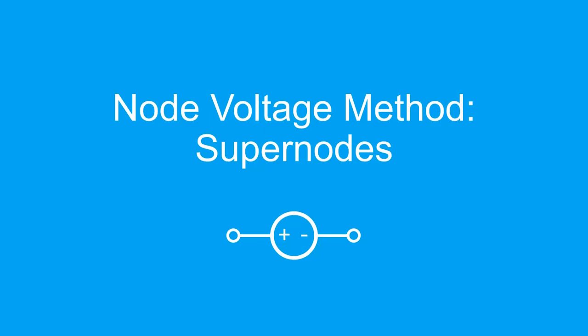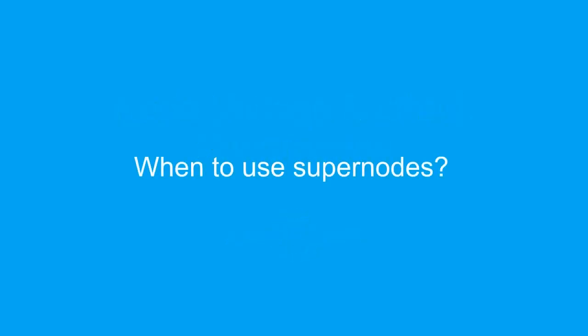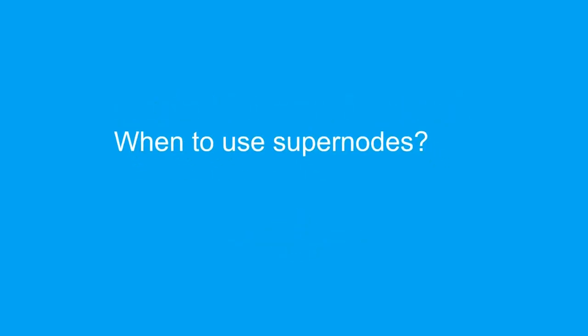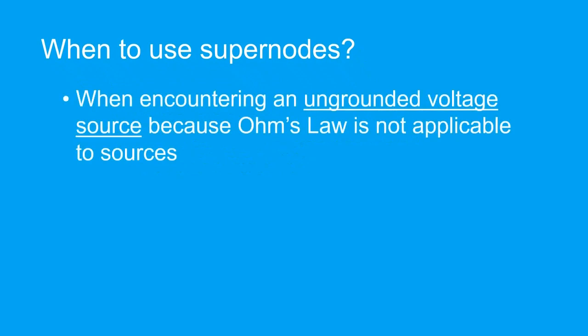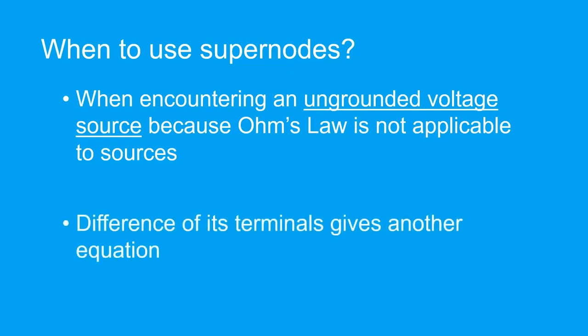In this video, we will learn how to conduct the node voltage analysis for cases that involve the use of supernodes. Supernodes are used when the circuit has an ungrounded voltage source, because we cannot use Ohm's law to describe the currents flowing through the sources. We can obtain another equation from the difference of the source's terminals.